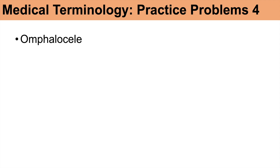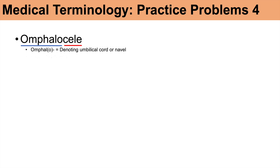The next word is omphalocele. Breaking it down: 'omphalo' means umbilical cord, the navel, or the belly button. '-Cele' is a suffix meaning herniation. So omphalocele is actually an umbilical hernia.